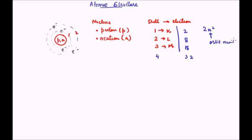If you observe the number of electrons that can exist in a particular shell, you will notice that this is equal to 2 times N squared, where N is the orbit number or shell number. So for the first orbital N is 1 and we get maximum 2 electrons; for N=2 it is 2×2²=8; for N=3 it is 2×3²=18, and so on.